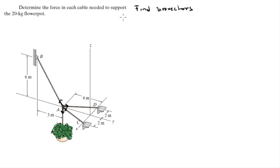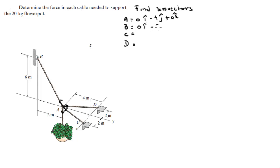To find the unit vectors, first we're going to find all the points involved: A, B, C, and D. Point A sits at (0, -4, 0). B sits at (0, -7, 6). C sits at (2, 0, 0). And D sits at (-2, 0, 0).